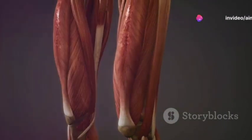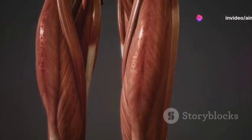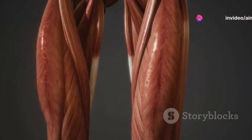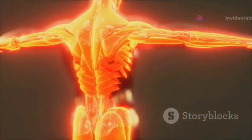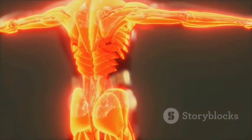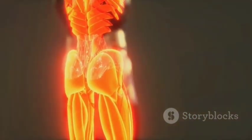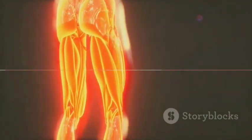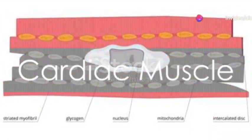It's this type of muscle that allows us to perform actions like walking, running, and lifting weights. On the other hand, non-transversal skeletal muscle is found in areas such as the diaphragm and various internal organs.